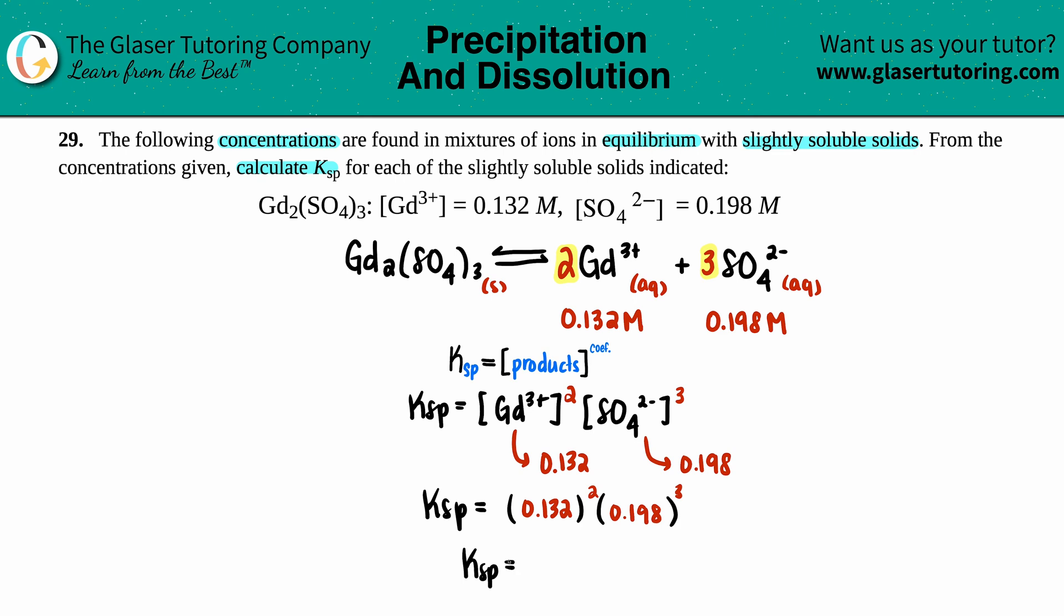Ksp, the solubility product, equals 0.132 raised to the second times 0.198 raised to the third, and three sig figs for this one: 1.35 times 10 to the negative fourth. And that's your solubility product, that's your Ksp.